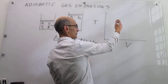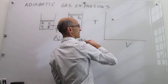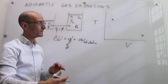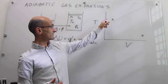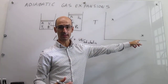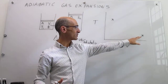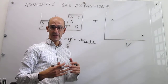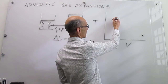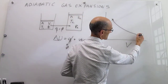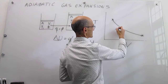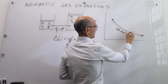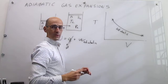We start with a small volume and end up with a larger volume — that is the expansion. The temperature is initially higher than at the end. That is the initial point, that is the final point of the expansion, and the adiabatic path connects them. That is how the system progresses along the adiabatic path.